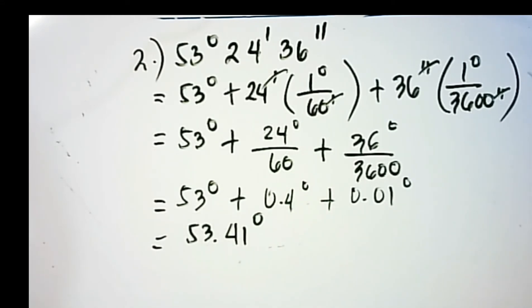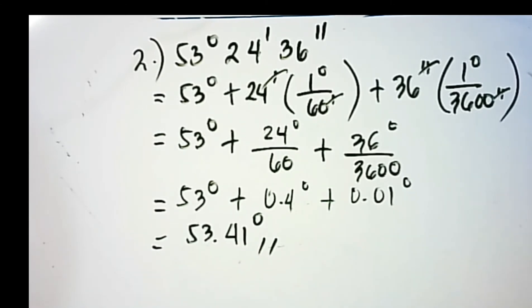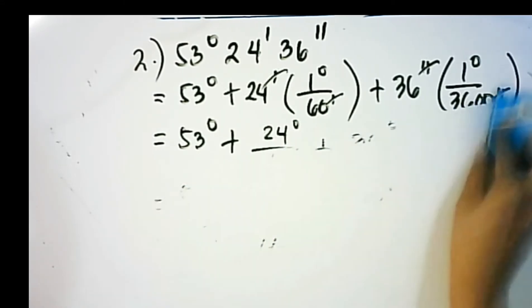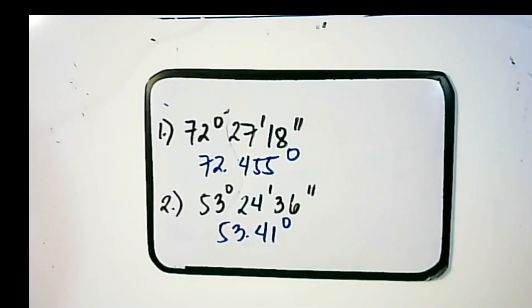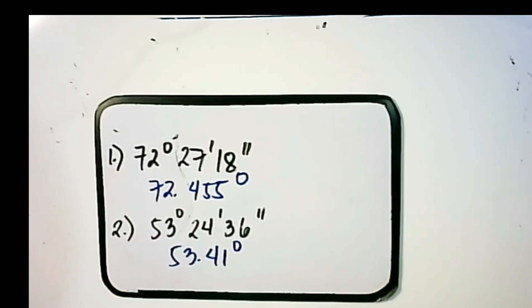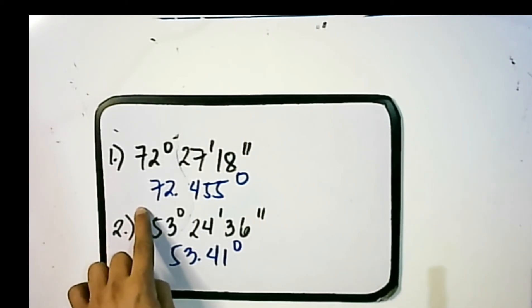So that is the answer: 53.41 degrees. Since we're done solving from DMS form into decimal degrees, this time we're going to convert decimal degrees into DMS form. We're going to use our answers from example number 1 and example number 2 — 72.455 degrees and 53.41 degrees — and try to reverse the conversion.